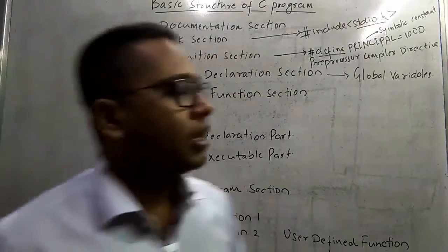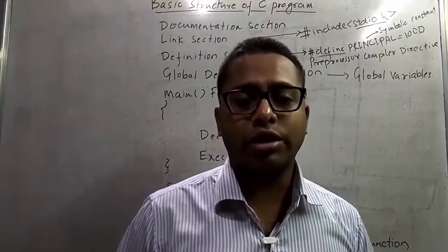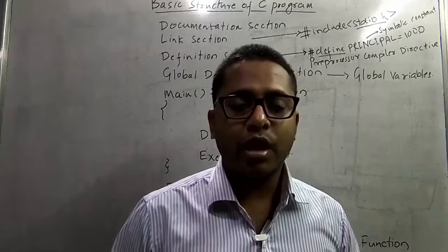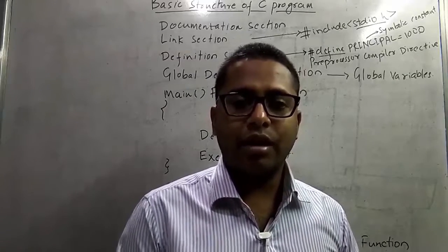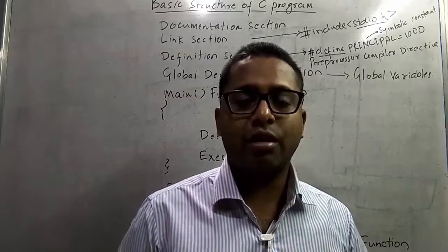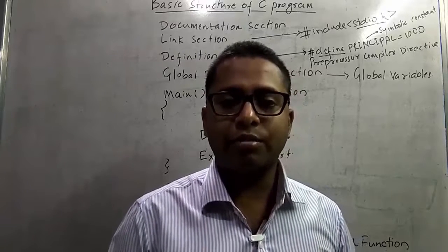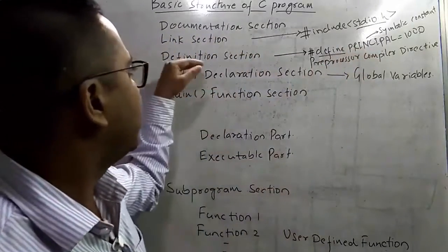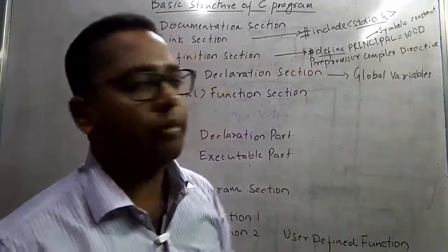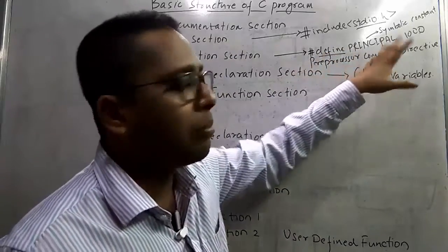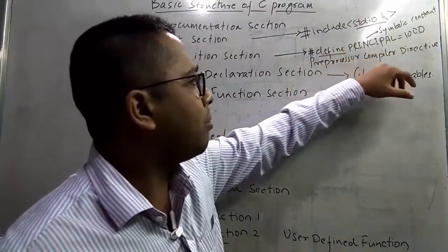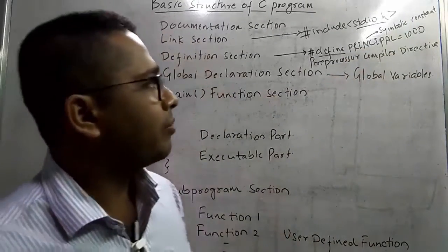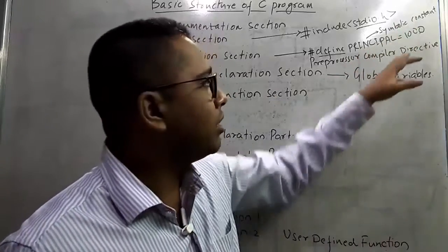The third section is the definition section. In the definition section we define all our symbolic constants. Symbolic constants are those constants which do not change during the execution of the program. Once we define a symbolic constant, we can use its value anywhere in our entire program. For example: #define PRINCIPAL 1000. Here #define is the preprocessor compiler directive and PRINCIPAL is the symbolic constant with a value of one thousand.